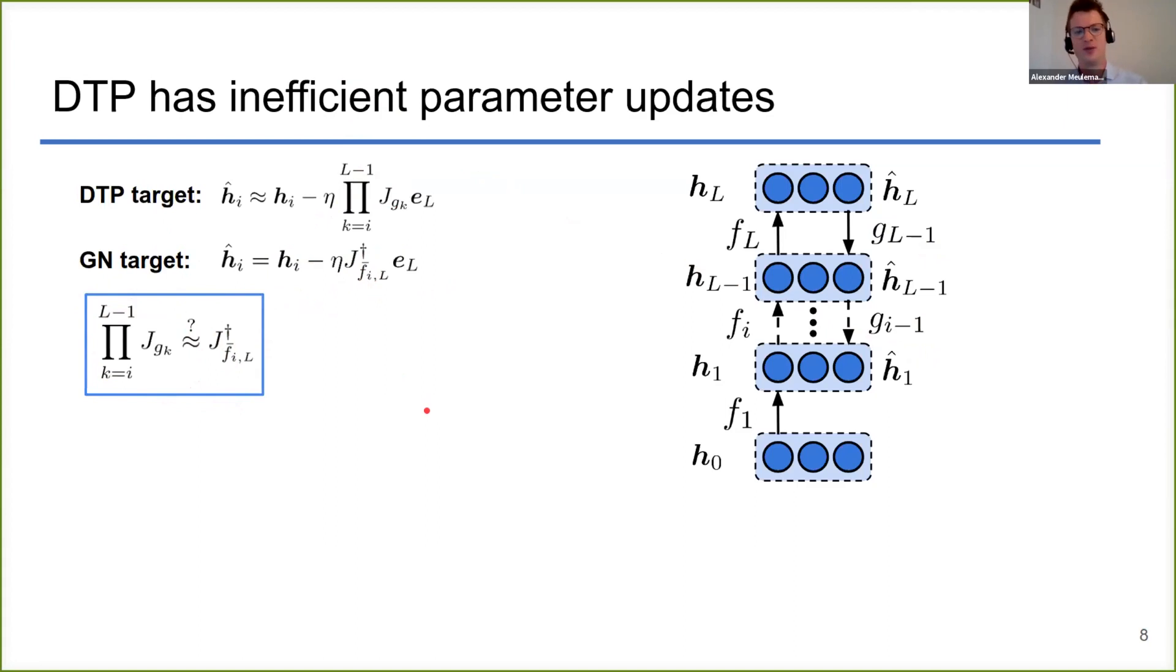However, unfortunately we theoretically showed that this is not the case in general, mainly because this pseudo-inverse of your output with respect to a hidden layer is not factorizable over all the layers. So this layer-wise training of each feedback mapping doesn't make a lot of sense because this pseudo-inverse of the output with respect to a hidden layer cannot be factorized over all the different layers.